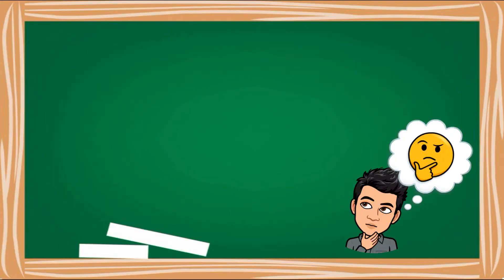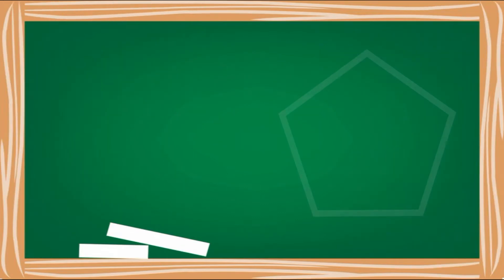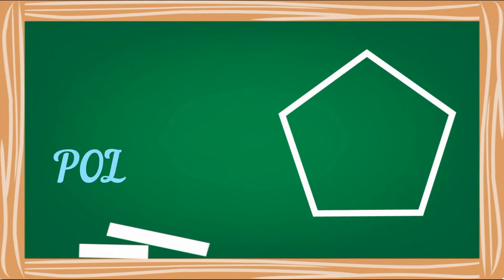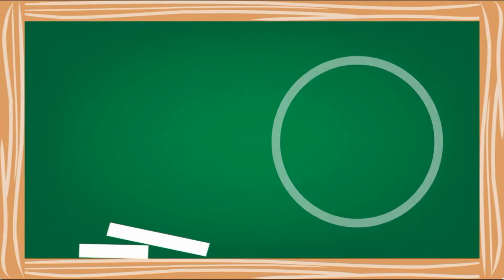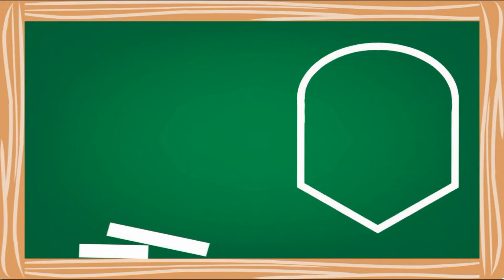So let's take a look at the following figures. Based on the definition, is it a polygon or not? It is a polygon. It is not a polygon. It is a polygon. It is not a polygon.